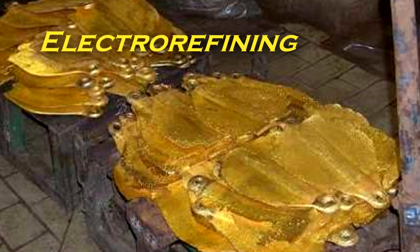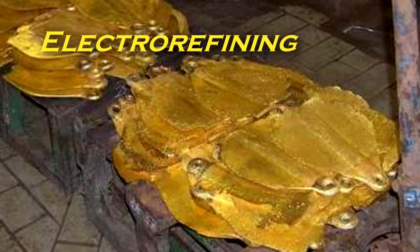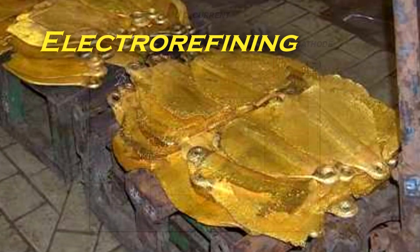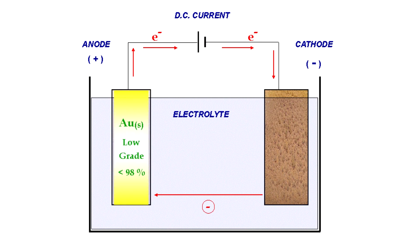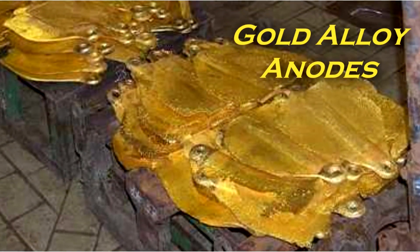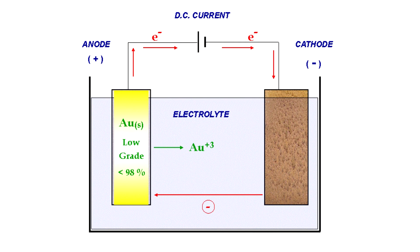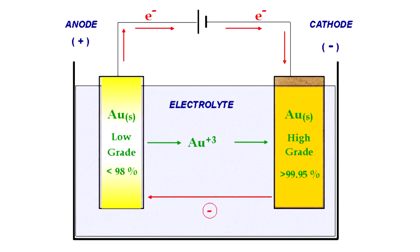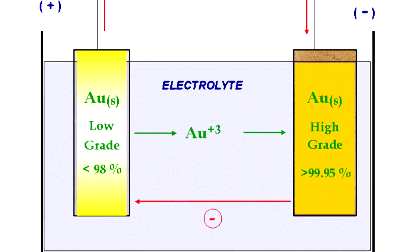Electrorefining is a very important technology used to refine precious metals to their purest form. Whereas electrowinning takes metals from leach solutions, electrorefining starts with anodes made of low-grade or mixed alloy precious metals. The electrolytic process takes electrons away at the anode, which dissolves the positively charged metal ions into solution. These ions are then selectively plated out of solution by adding back the electrons at the cathode. Fine-tuned chemistry of solutions and electrical currents are utilized to separate or part precious metals from each other.